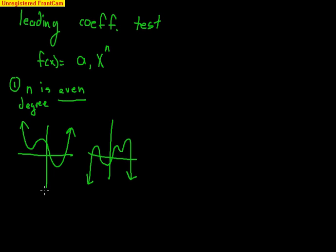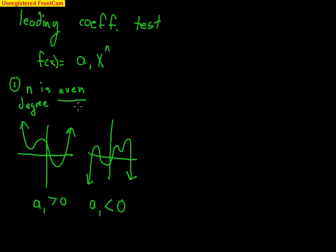If both ends are up, the leading coefficient a sub 1 is greater than 0 — positive. If both ends are going down, a sub 1 is less than 0 — negative. So if the leading coefficient is positive and your degree is even, both ends are going up. Both ends are going down if your leading coefficient is negative.